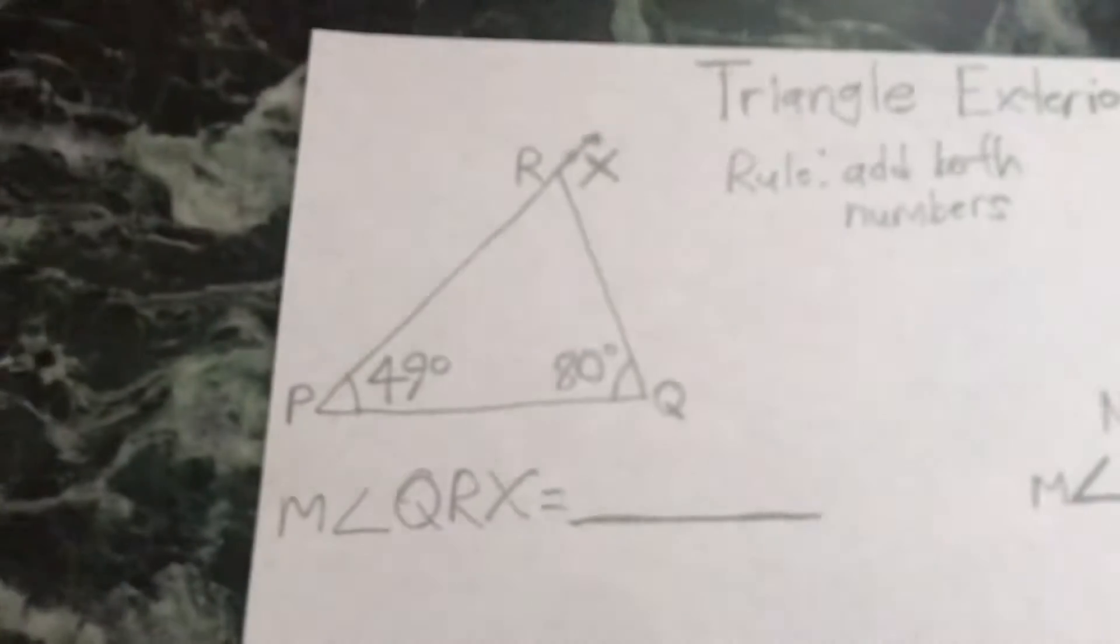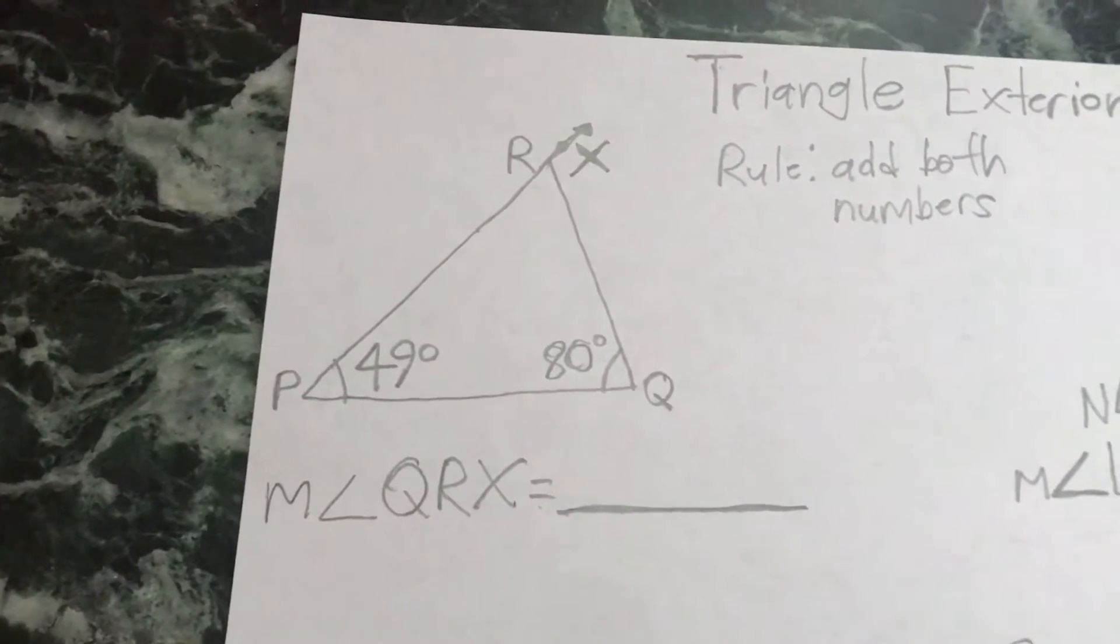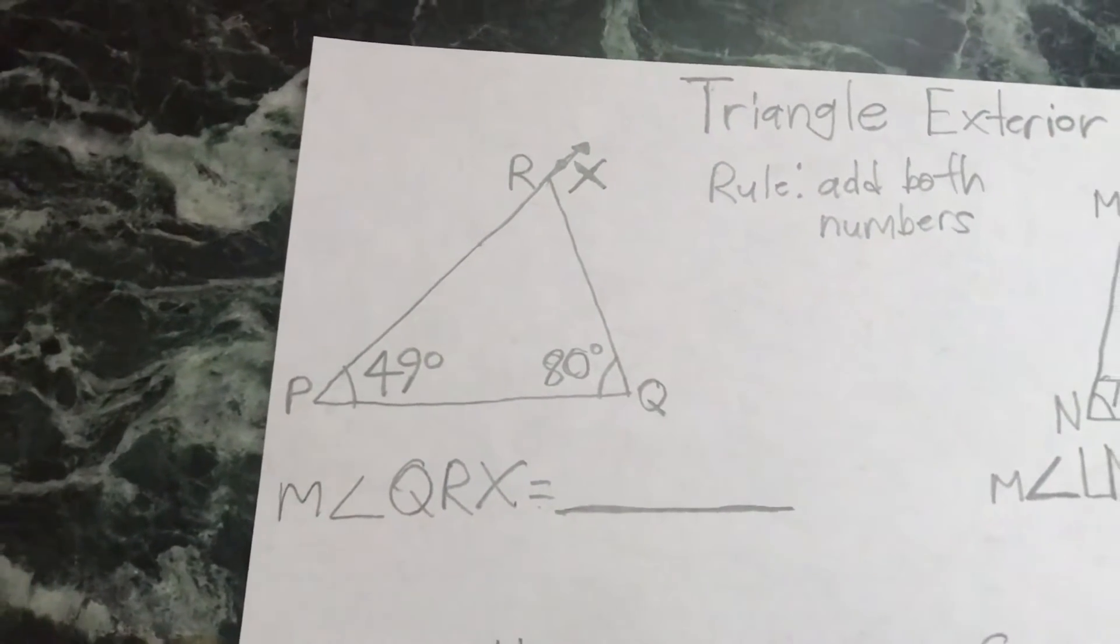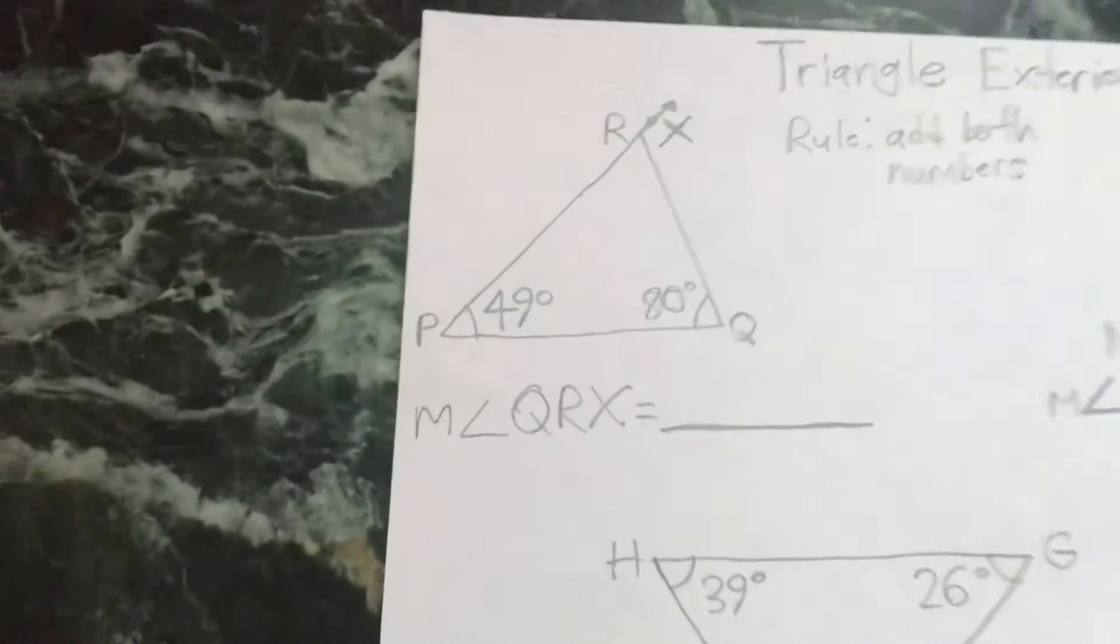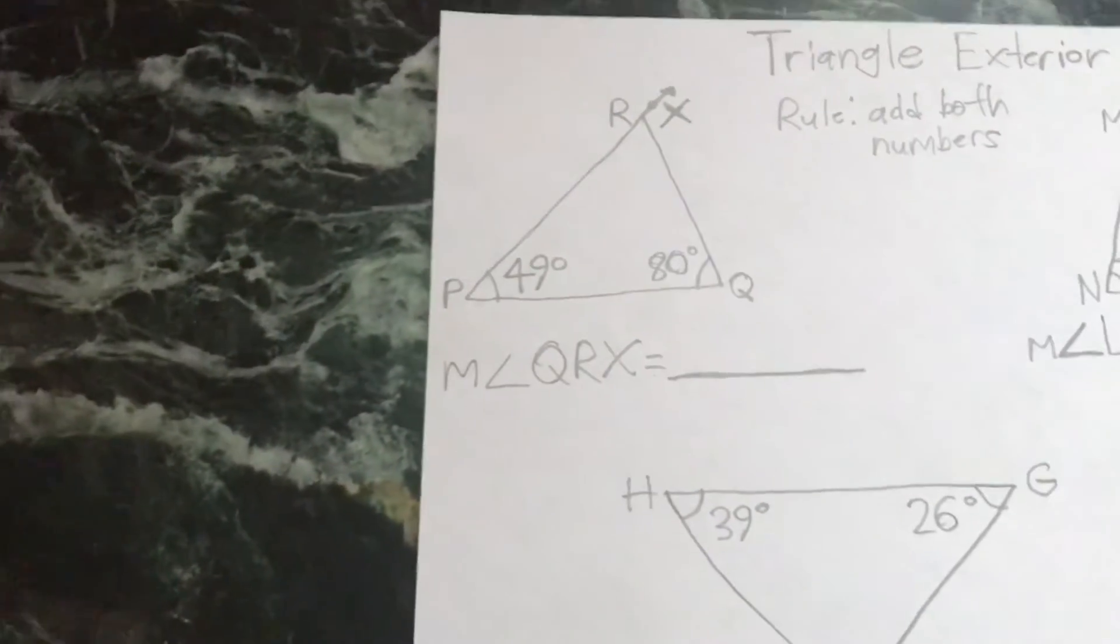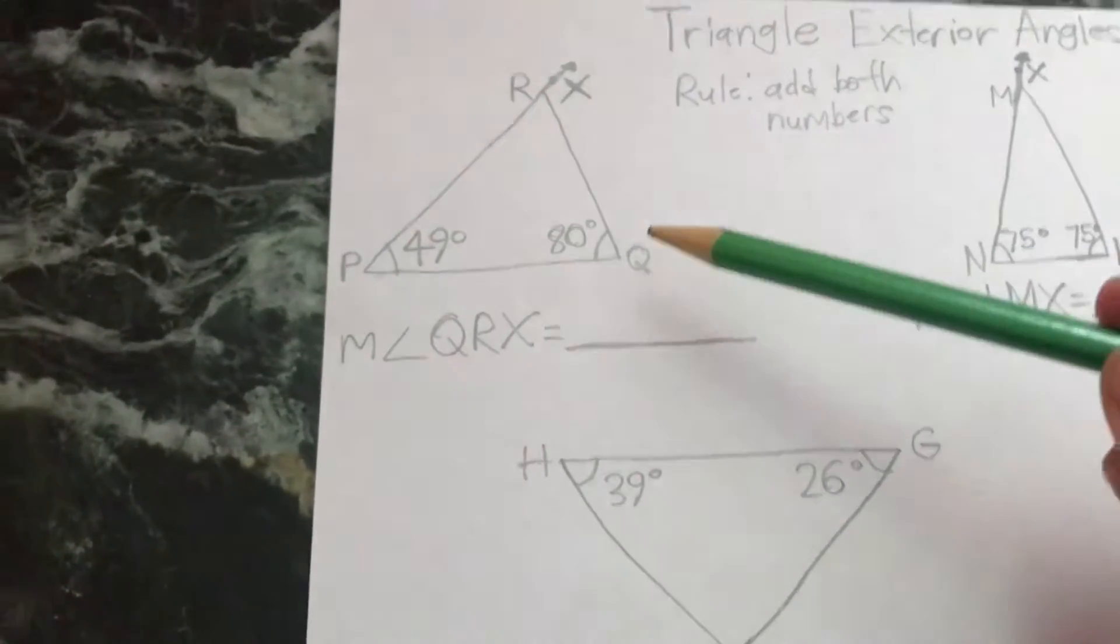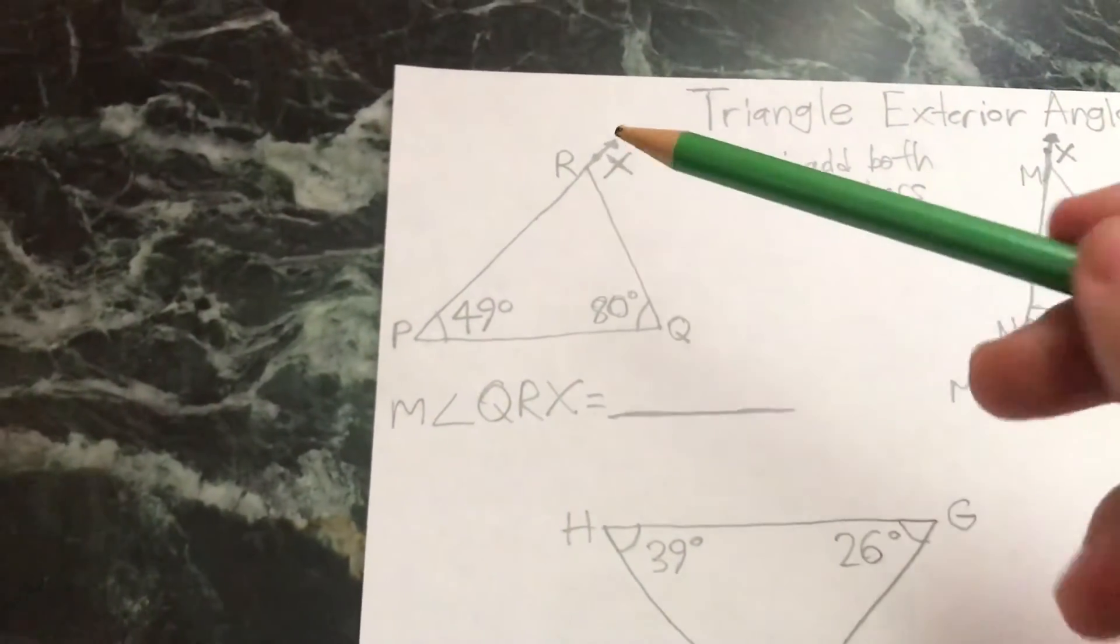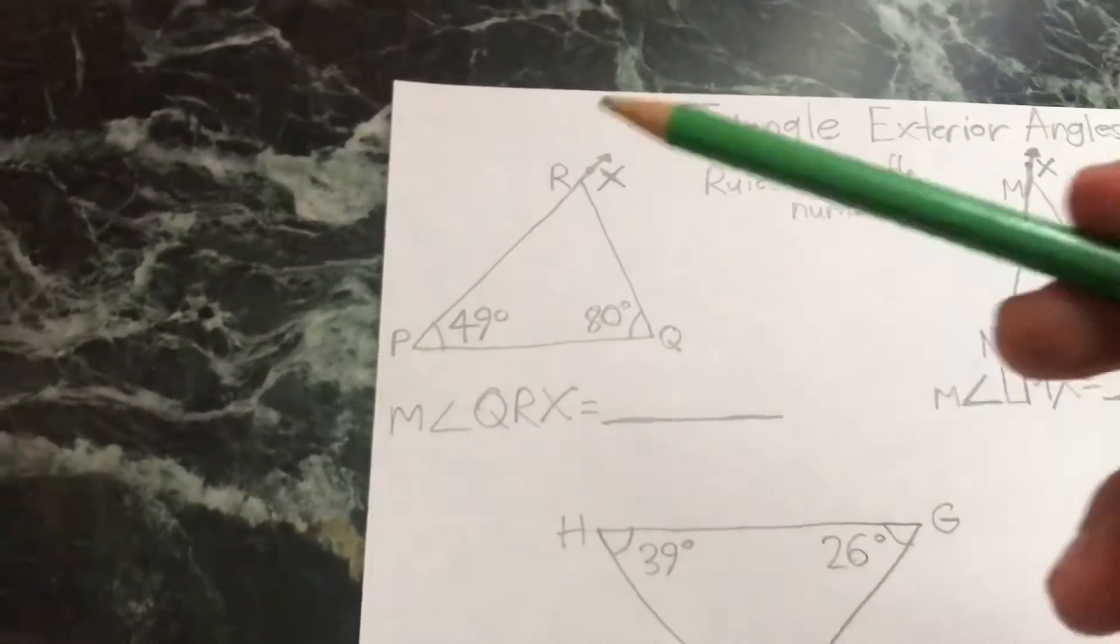add both of these numbers. So if you have two of the angle numbers, you add both of them. I'll give you an example here. So here with Q, R, and X, with the two numbers, you add both of them.